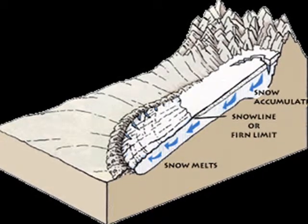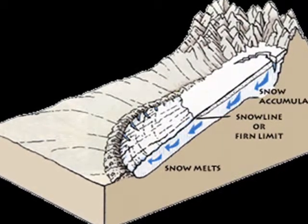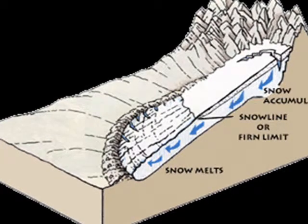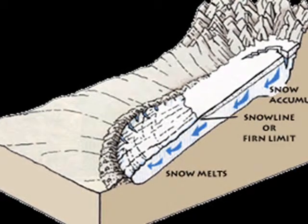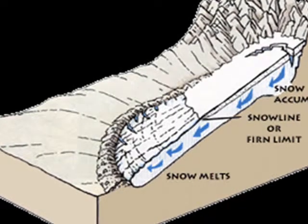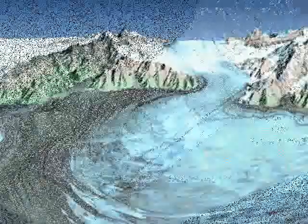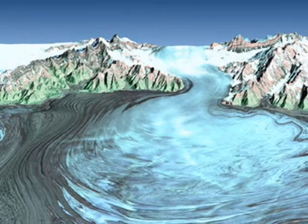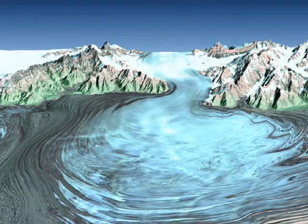Glaciers occur when snow accumulates faster than it can melt. A massive body of snow packs down and becomes thicker and thicker, heavier and heavier, until it has the weight and mass of a rock, even though it is still frozen water. Gravity then pulls this massive snowpack down to lower elevations, and as it travels, it shapes and scrapes and fractures and changes the surface of the earth.